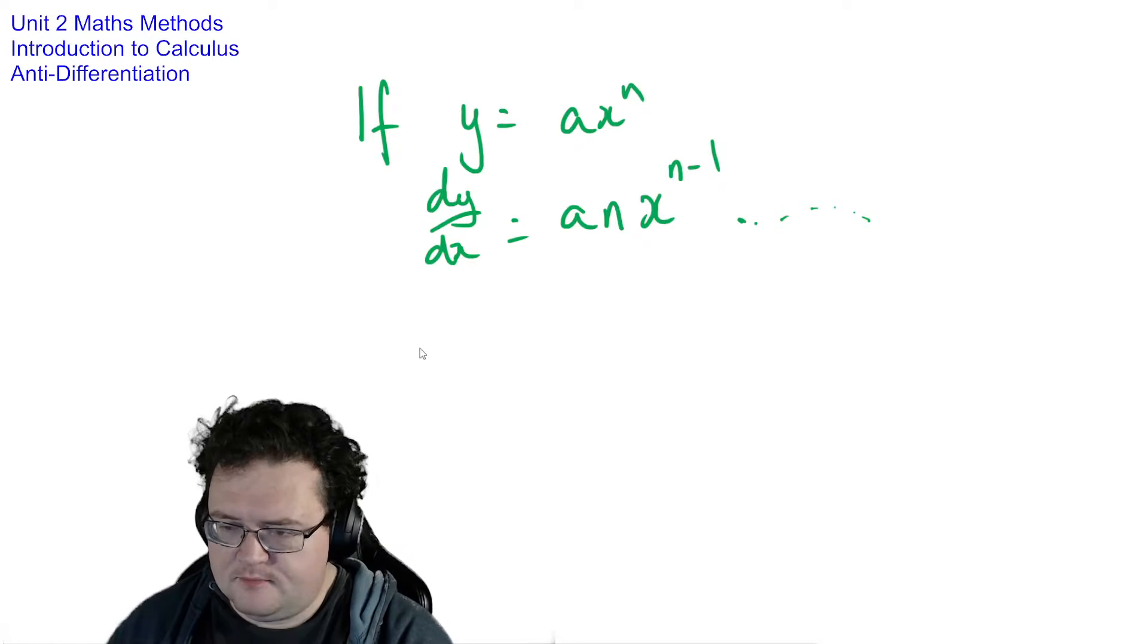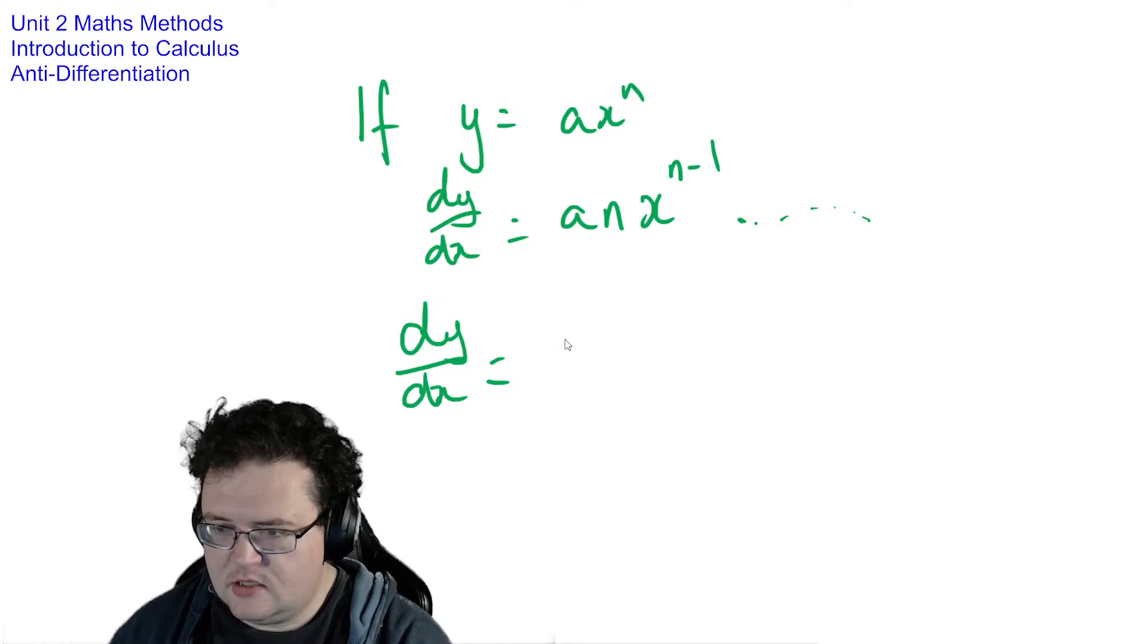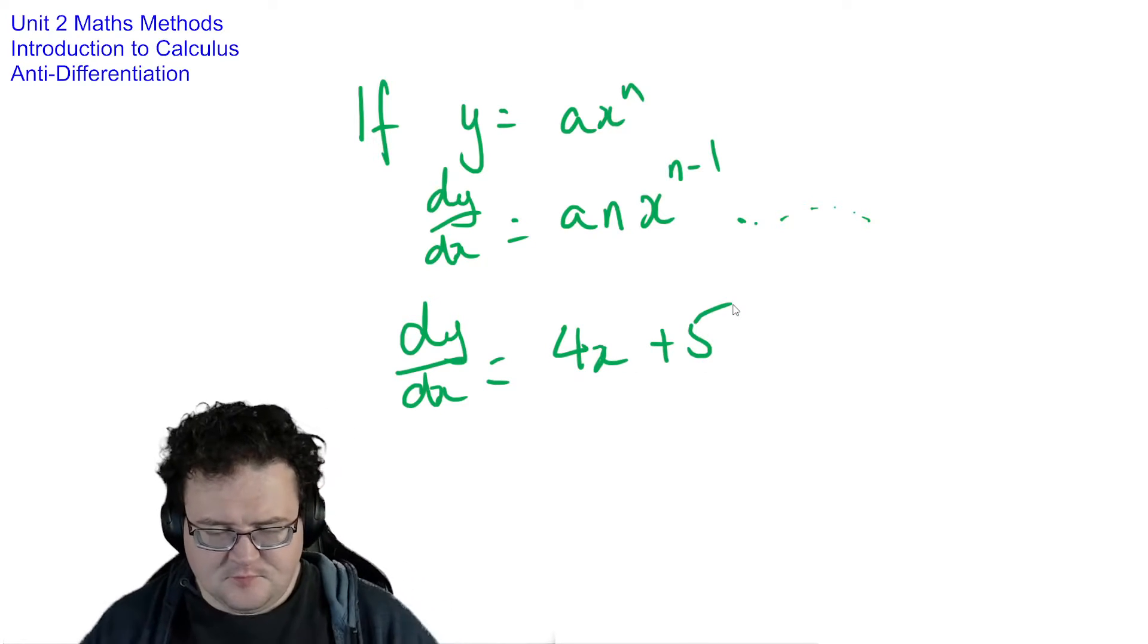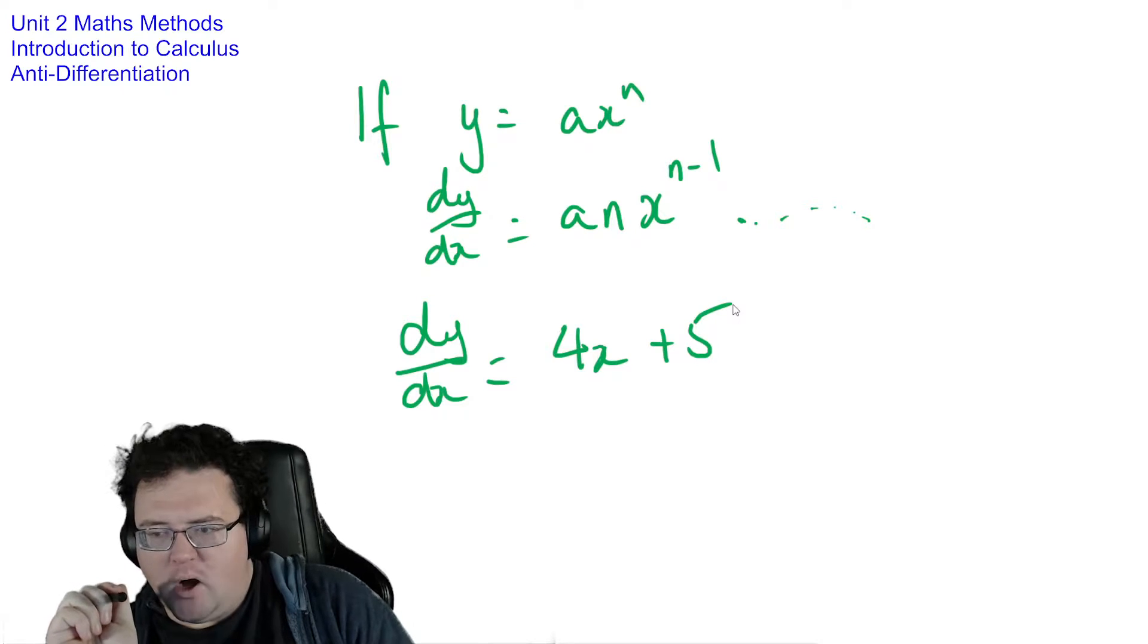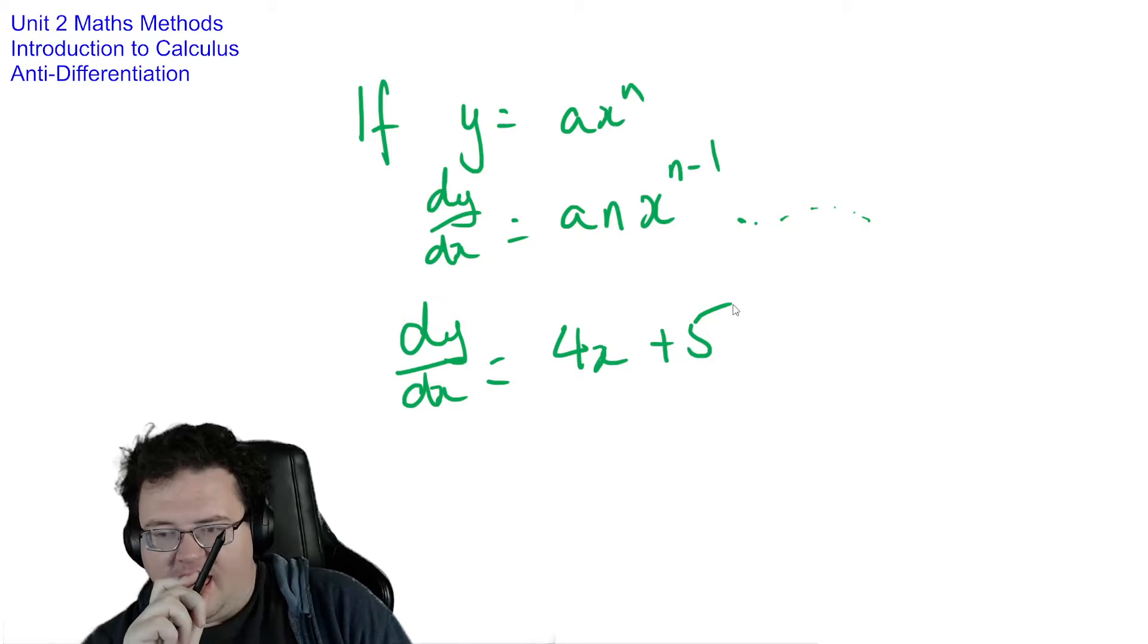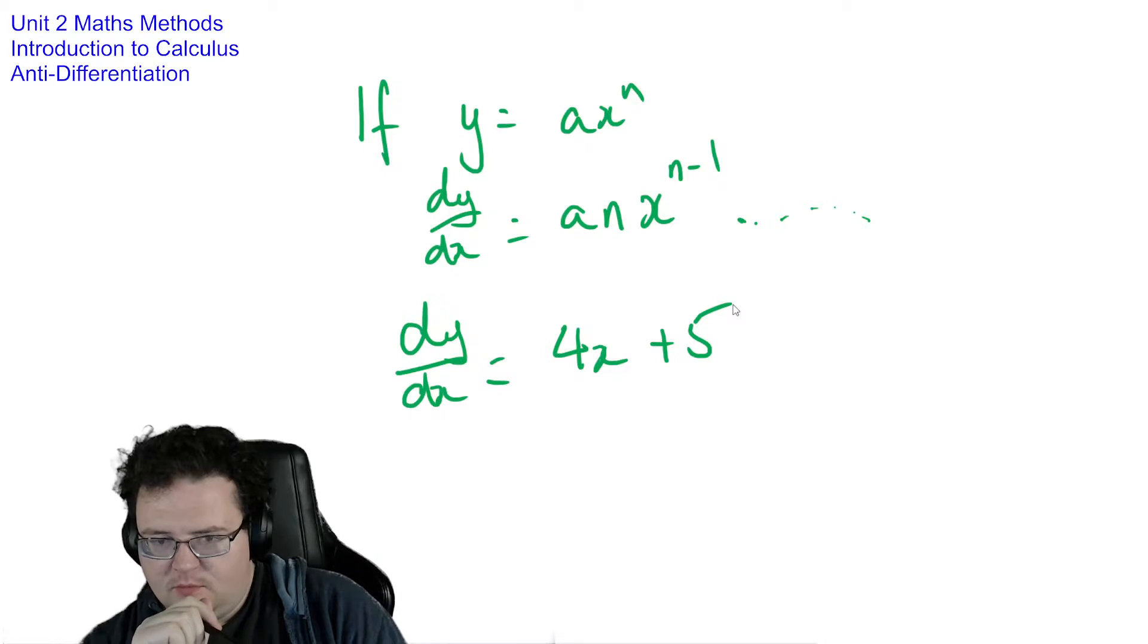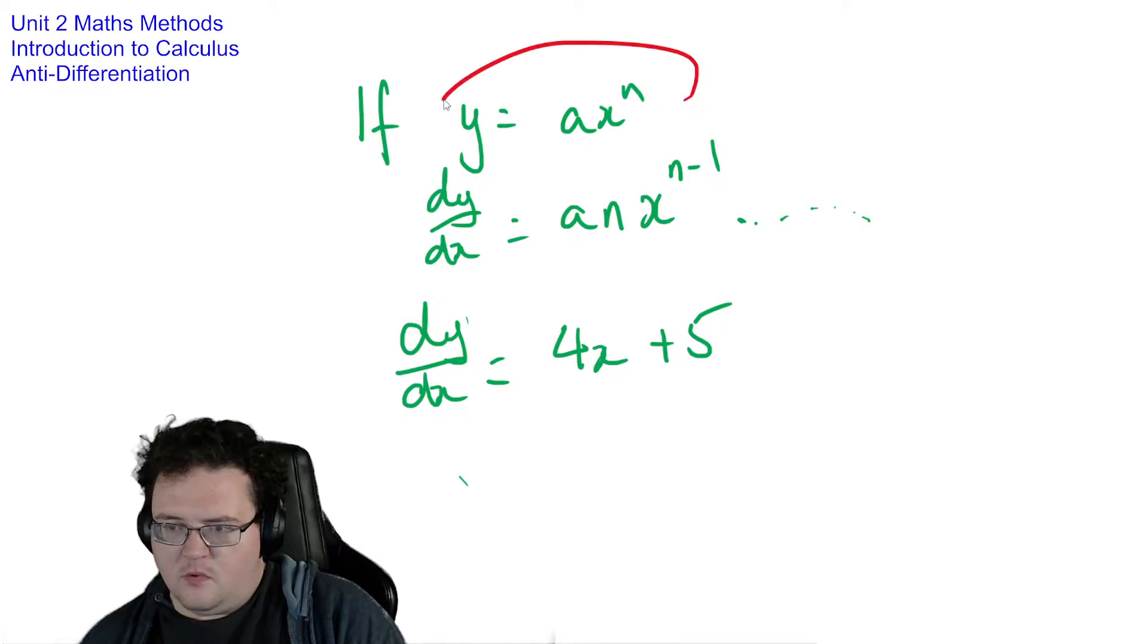So if I start with dy dx equals 4x plus 5, what possible equations could I have started with to create that derivative? Now, what we can do is we can follow the logic backwards and do the opposite of what we've got going on here.